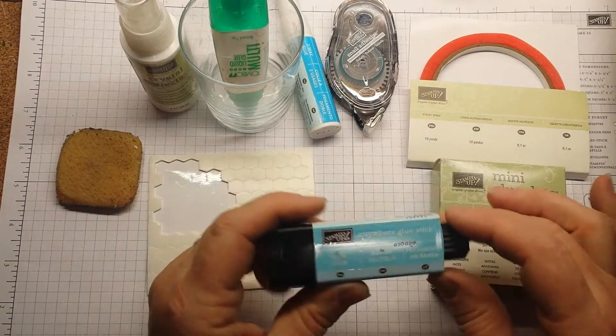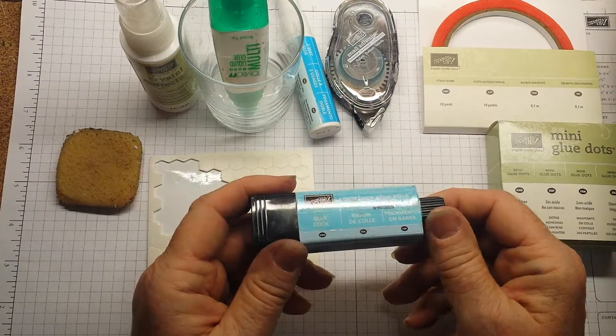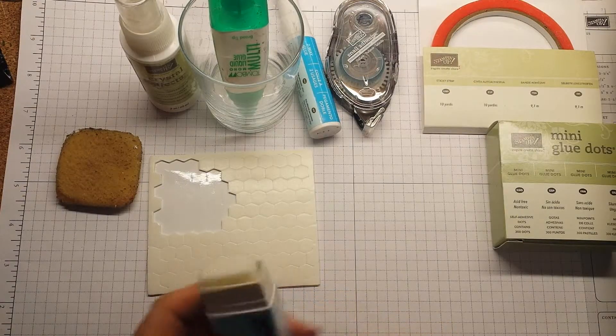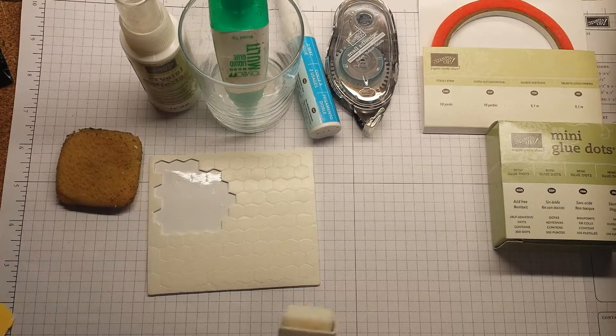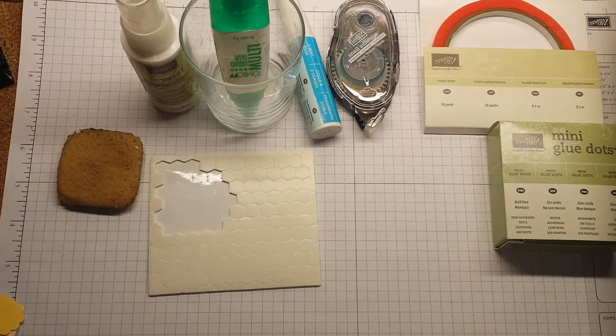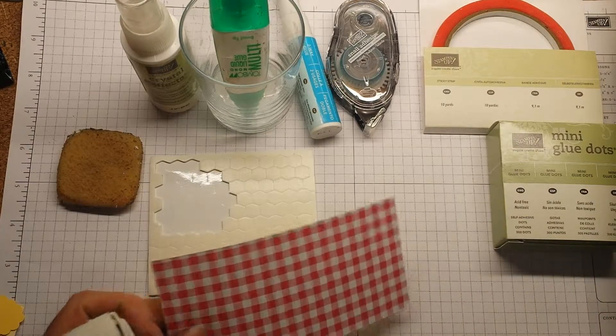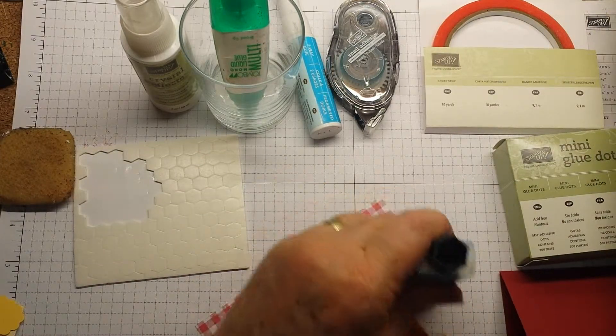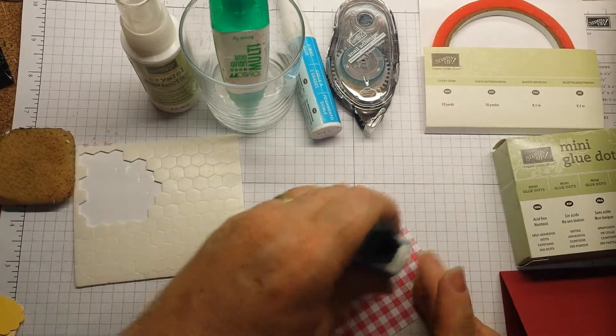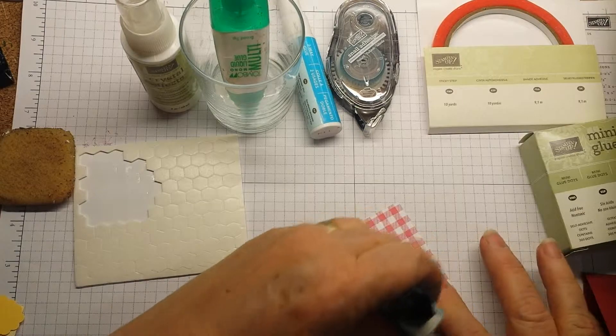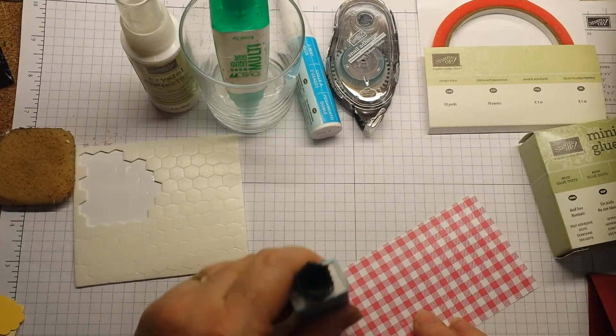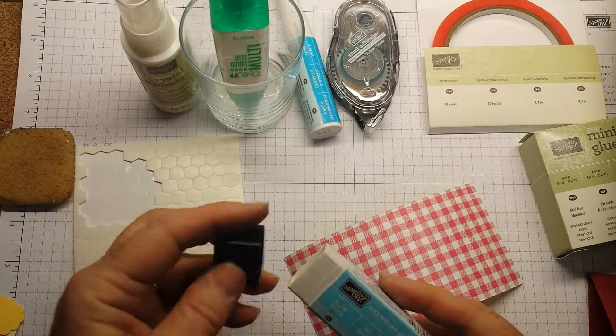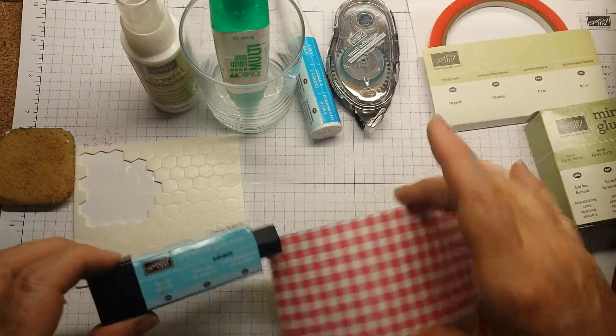One of the adhesives that I don't use all the time is this Anywhere Glue Stick. But one time I wanted to adhere a large sheet of paper, actually foil on a card, and I wanted to get a nice even coverage. And so I thought I'd try the glue stick. Now, I am a retired teacher, and I am used to the glue sticks my kids would use at school. And frankly, I was not impressed with glue sticks. And I used our glue stick, and I was amazed.